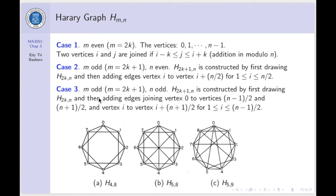For the third case, if M is odd, and then N is odd. The graph is constructed by first drawing the graph like in the first case. And then, adding edges joining vertex 0 to vertices (N minus 1)/2 and (N plus 1)/2. And edges from vertex I to these vertices from I equals 1 up to (N minus 1)/2. For this case, we have this example, H_5,9. First we draw the H_4,9 by the first case. And then, we add additional edges connecting from 0 to this one, and then from other vertices.